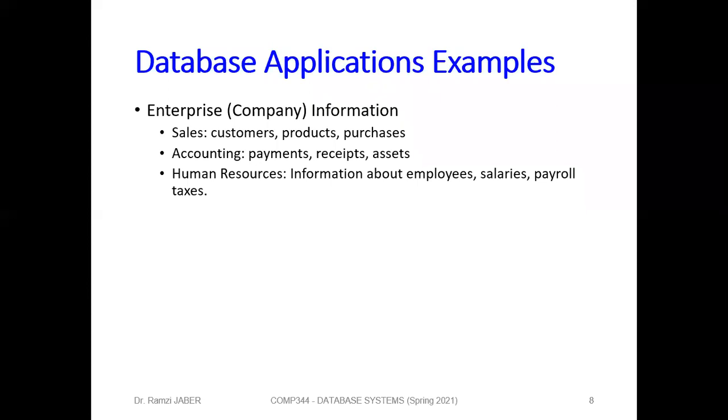The accounting department has payments, receipts, and assets. Also, in the human resources department, they have information about each employee — salary, payroll, tax, and others. All this data can be handled in one application plus database. This is the biggest example — 99% of all database applications are for enterprise companies.